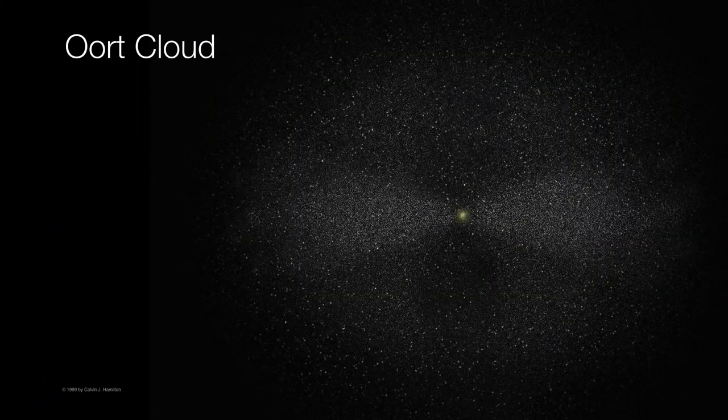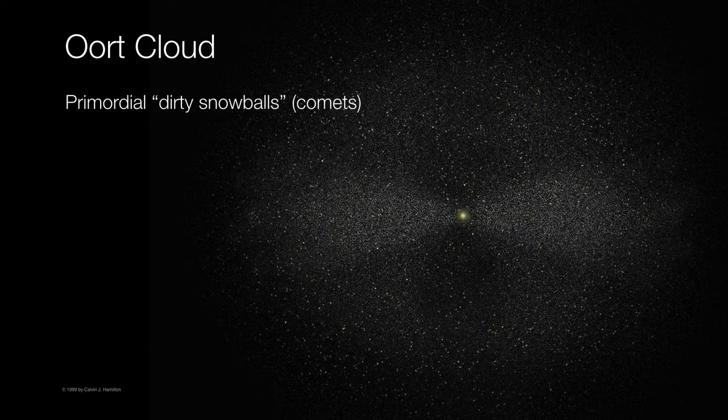Now, the farthest possible extent of any object in the solar system orbiting the Sun lies at the outer edges of something called the Oort cloud. It's really just a cloud of primordial, or dirty snowballs — in other words, comets. And nobody knows for sure just how far these comets can be from the Sun and still remain in orbit.